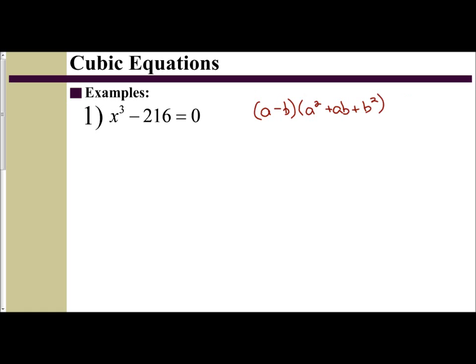Let's first identify our A and our B. The cube root of x cubed is x, and the cube root of 216 is 6, so B is 6 and A is x. We go ahead and do our factoring. We have A minus B, so that is x minus 6 in the first parenthesis.